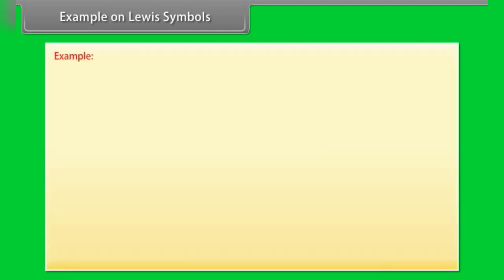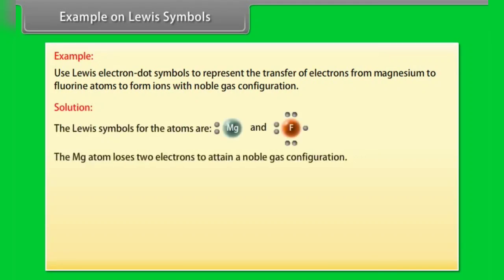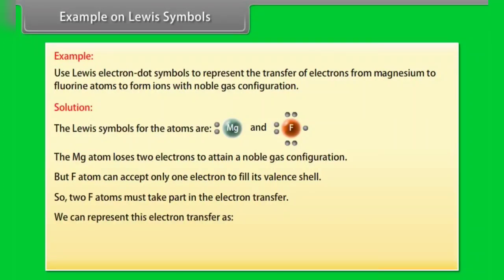Let's take an example on Lewis symbols. Use Lewis electron dot symbols to represent the transfer of electrons from magnesium to fluorine atoms to form ions with noble gas configuration. The Mg atom loses 2 electrons to attain a noble gas configuration, but an F atom can accept only 1 electron to fill its valency shell. So 2 F atoms must take part in electron transfer.